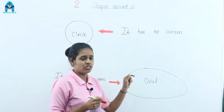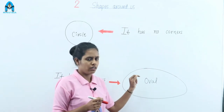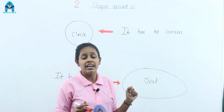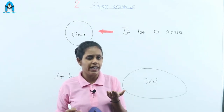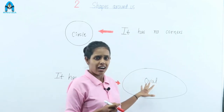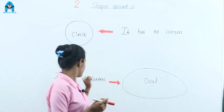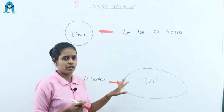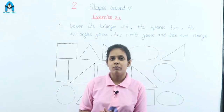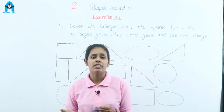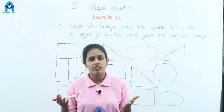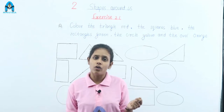The next shape is an oval. An example of an oval shape is an egg. The shape of an egg is an oval. It also has no corner. So we have learned about plane shapes: rectangle, square, triangle, circle, and oval.